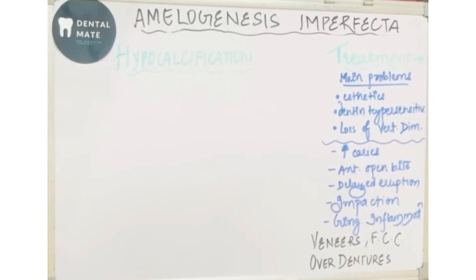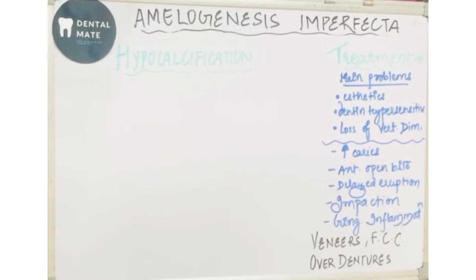Hello everyone, welcome to my YouTube channel. Today we are discussing the last and final part of amelogenesis imperfecta. In this fifth part, we will be discussing the hypocalcification type of amelogenesis imperfecta and the various treatment options that could be given to correct amelogenesis imperfecta. So first of all, let us talk about the hypocalcified type.